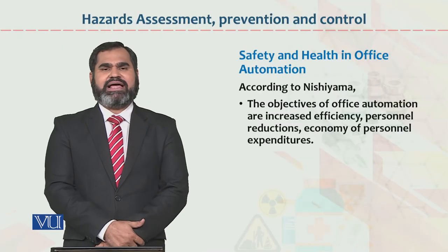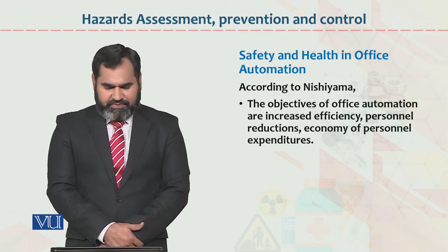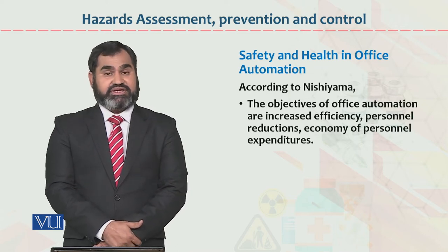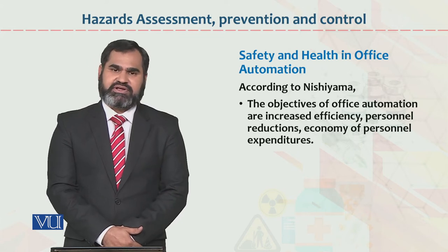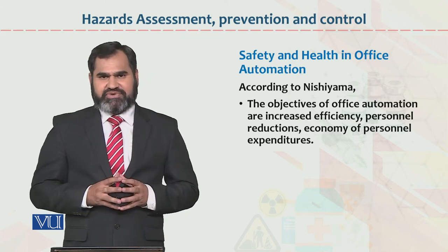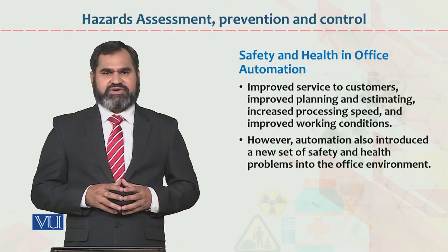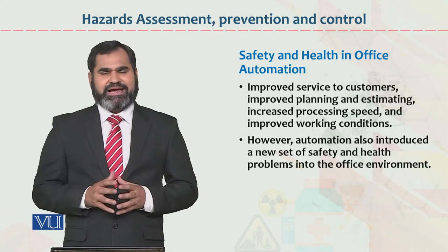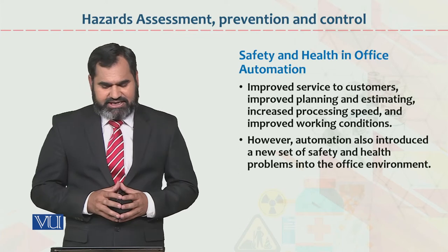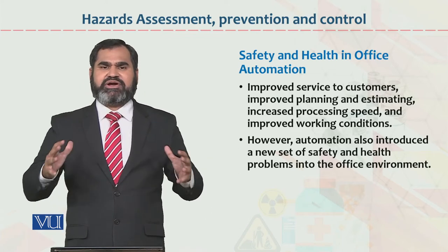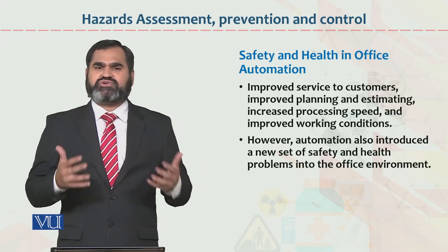Safety and health in office automation. According to researchers, the objectives of office automation are: increased efficiency, personal reduction, and economy of personal expenditure. Agar yeh 3 objectives aapke achieve nahi hote hain, to automation ki aapko need nahi hai. Improved service to customers, improved planning and estimates. However, automation also introduces a new set of safety and health problems into the office environment.